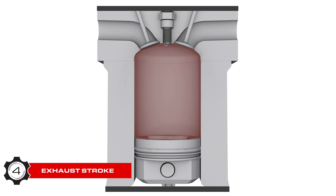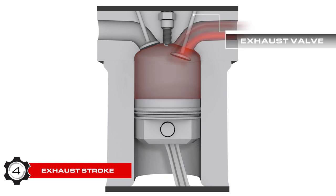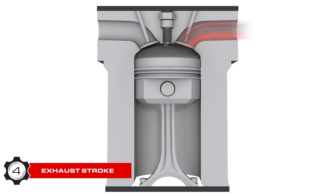And finally, we have our exhaust stroke. As the piston reaches the bottom of the cylinder at the end of the combustion stroke, our exhaust valves begin to open, releasing pressure. The upward movement of the piston pushes out most of the remaining exhaust left in the cylinder, and the exhaust valves close. After the cycle is complete, it just repeats and repeats until you either shut your car off or something happens that keeps it from repeating.